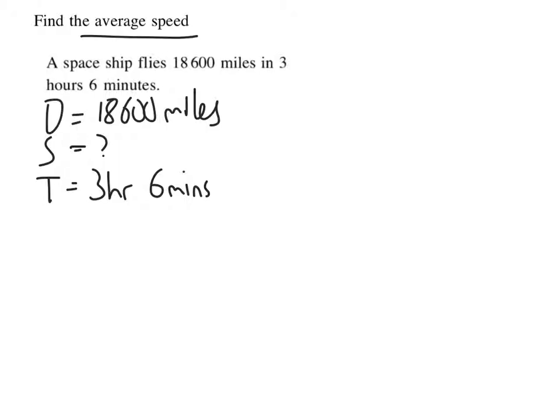To change that to decimal time, I write 3, that's the number of hours, plus 6 minutes as a fraction of an hour. 6, that would be 6 out of 60 minutes. I put that into my calculator and I get 3.1 hours.